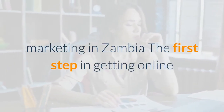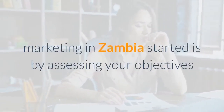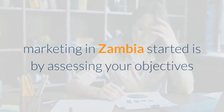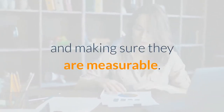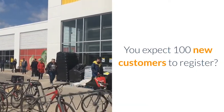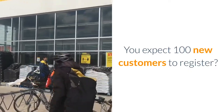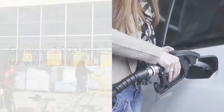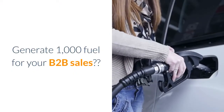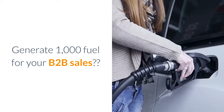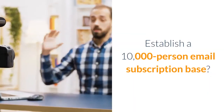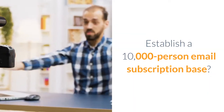How to get started with online marketing in Zambia: the first step is by assessing your objectives and making sure they are measurable — for example, expecting 100 new customers to register, generating 1,000 leads for your B2B sales, or establishing a 10,000-person email subscription base.